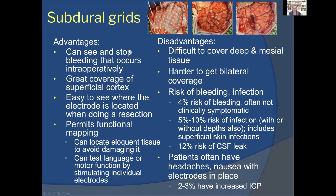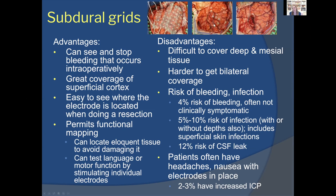Subdural grids have surgical advantages: done via craniotomy, any bleeding is immediately visible and controllable. You get excellent superficial coverage, and during resection you know exactly where the electrodes are located — the neurologist gives exact electrode numbers and you can mark the brain directly at the seizure onset zone and resect right there in the same setting, confirming you're taking out exactly what the EEG identified. It also permits functional mapping.